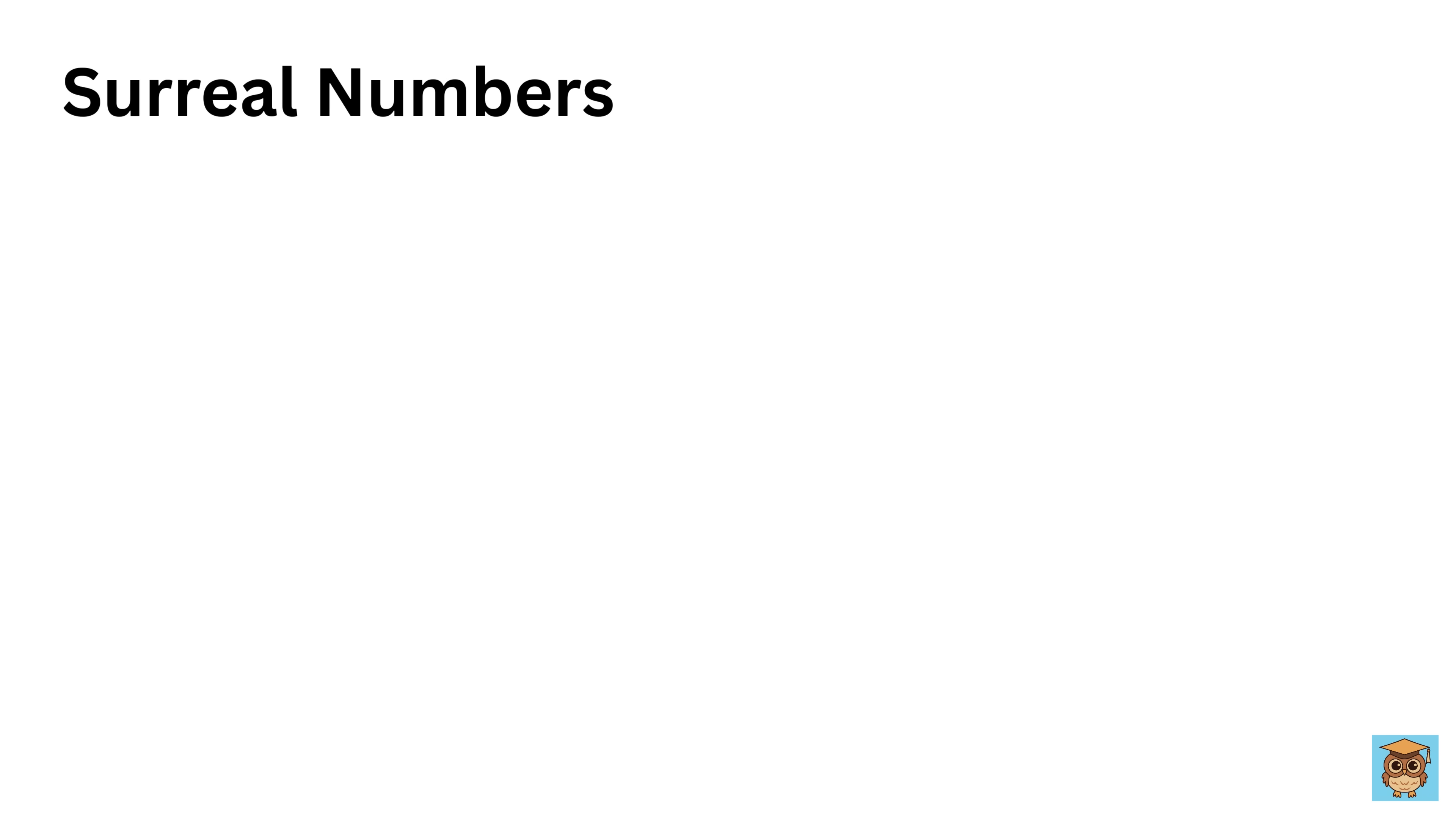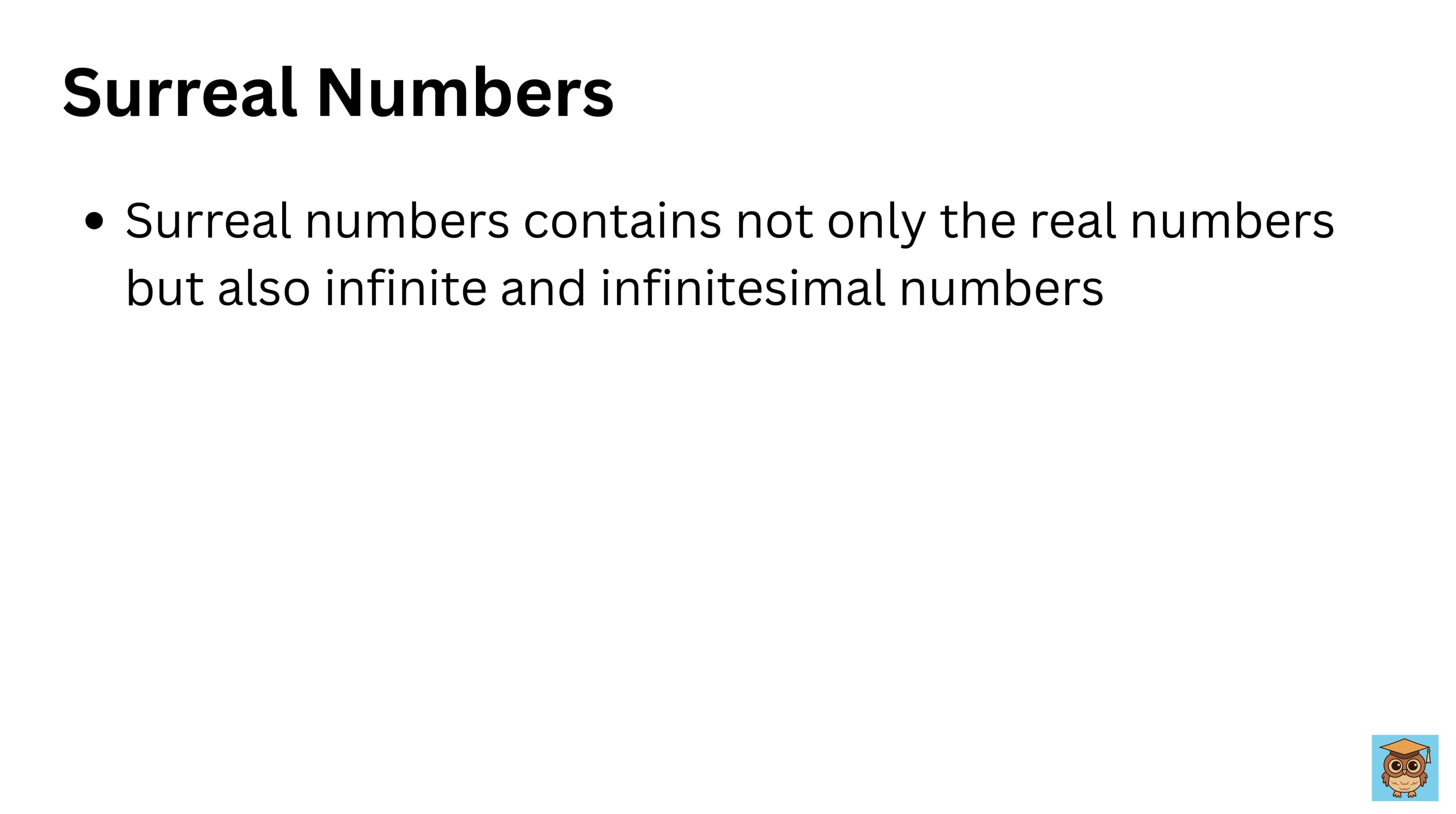Surreal numbers are a way to include all numbers, even those that seem to go beyond ordinary numbers, like infinitely large or infinitely small ones. For example, imagine a number called omega, which is bigger than any regular number like one, two or a million. A surreal number could be omega plus one, which is even bigger, or one divided by omega, which is super tiny but not zero. These numbers help mathematicians deal with ideas like infinity in a very precise way, almost like creating a number for every possible gap in the number line. These are useful in abstract math and game theory.